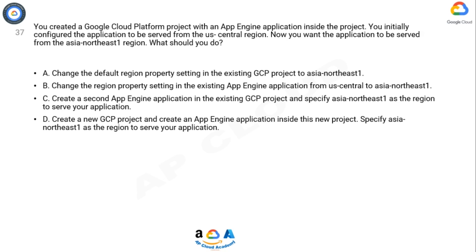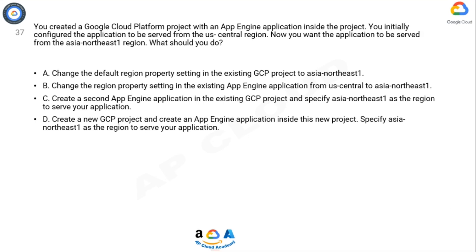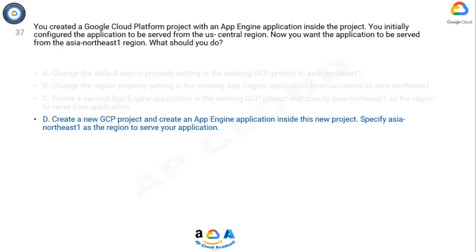Now think for 10 seconds for the answer. App Engine application is a resource that you must create to enable App Engine. The App Engine application resource defines the region in which you want to run your web service and store its related settings, credentials, and metadata. Only a single App Engine application resource can be created per cloud project, and the specified region cannot be changed after those resources are created. You cannot change the region or zone of the deployed App Engine service application. The correct answer is D.